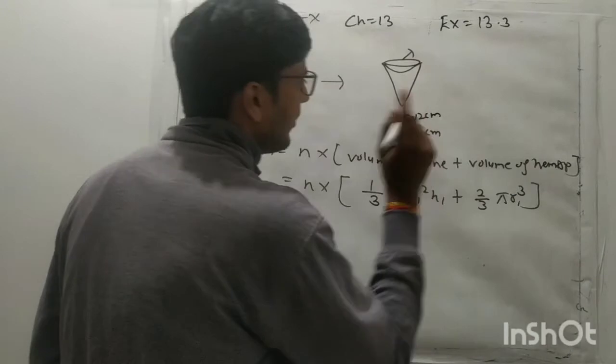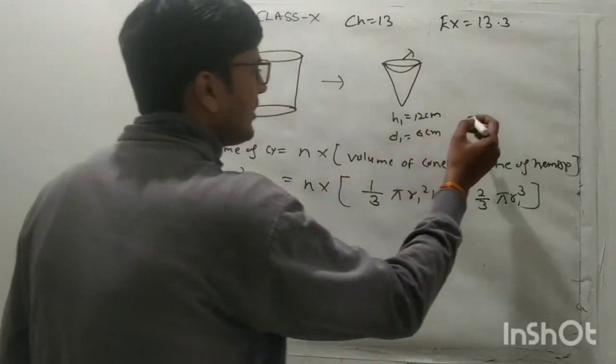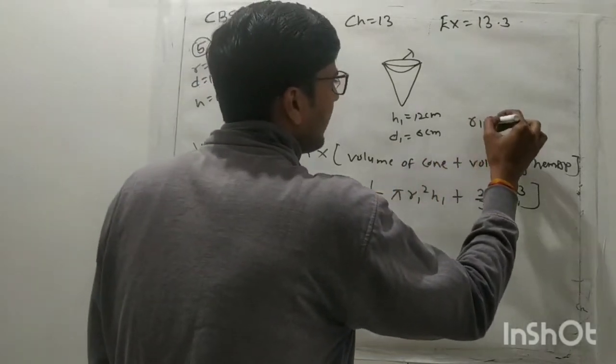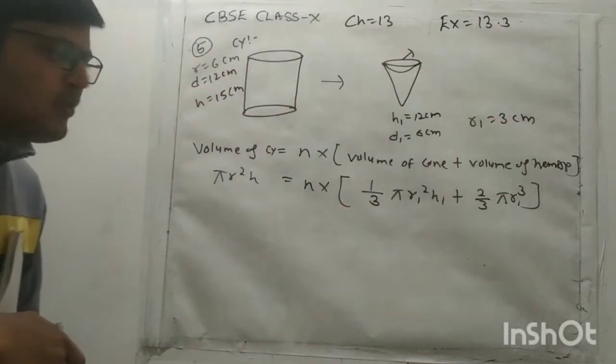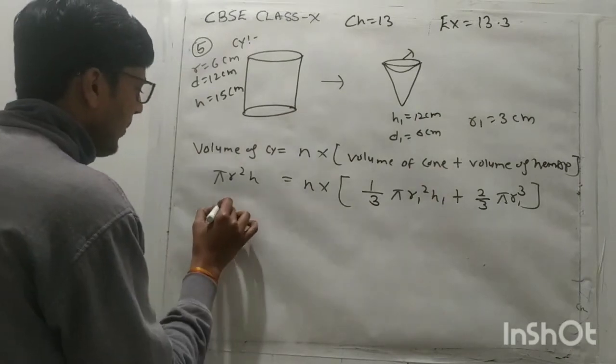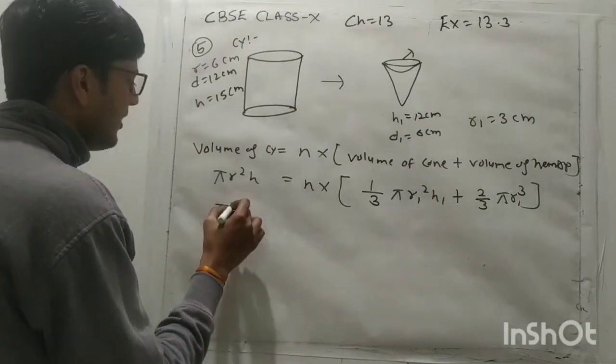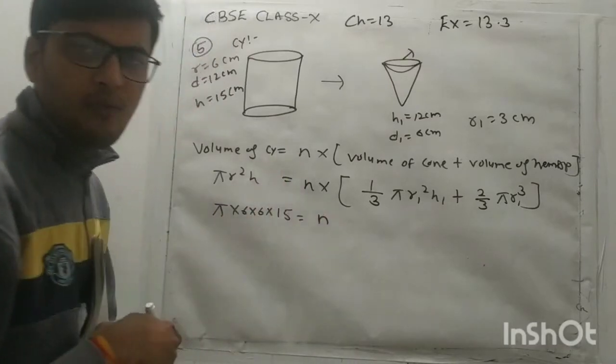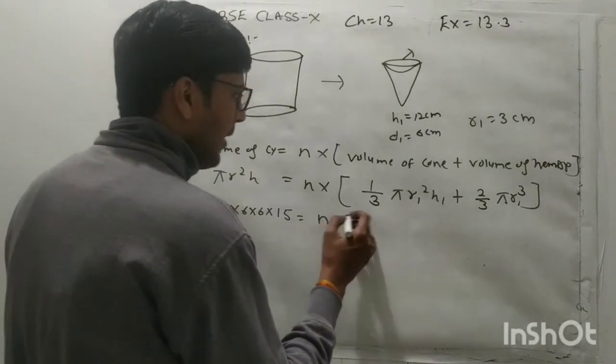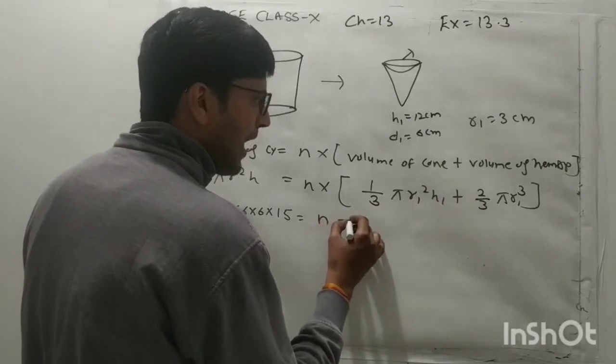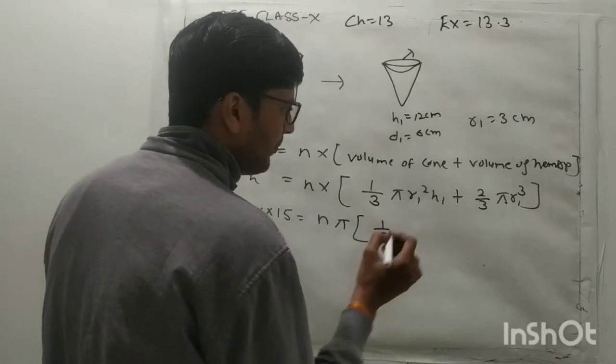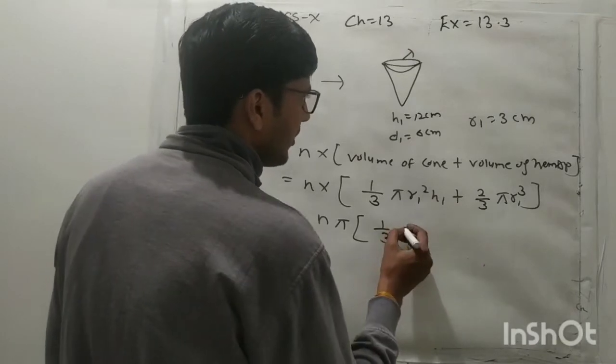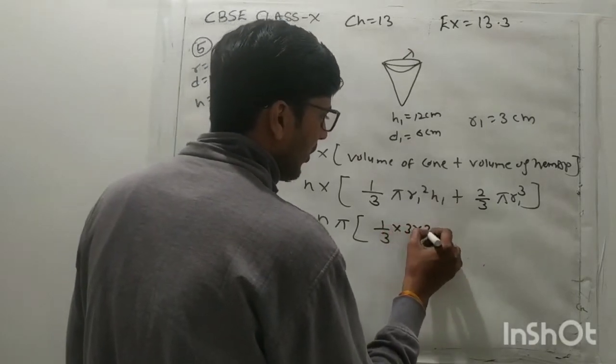Now n into volume of cone is what, 1/3 of pi and it is r1 square h1. And it is volume of hemispherical is 2/3 of pi r cube. So here r is also r1, same, diameter 6 hai na, diameter is 6 cm. To iska radius kitna hoga, r1 is 3 cm and height to aapko given hai, 12.